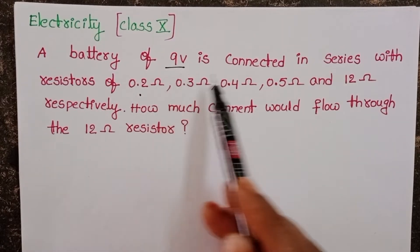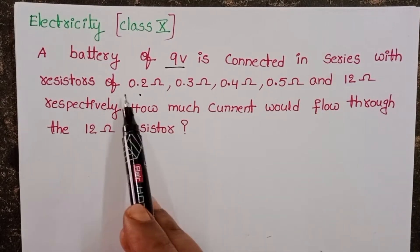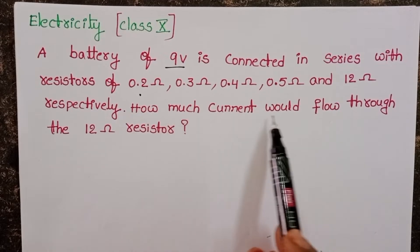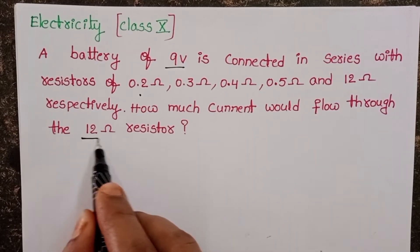A battery of 9 volts is connected in series with resistors of 0.2 ohm, 0.3 ohm, 0.4 ohm, 0.5 ohm, and 12 ohm respectively. How much current would flow through the 12 ohm resistor?